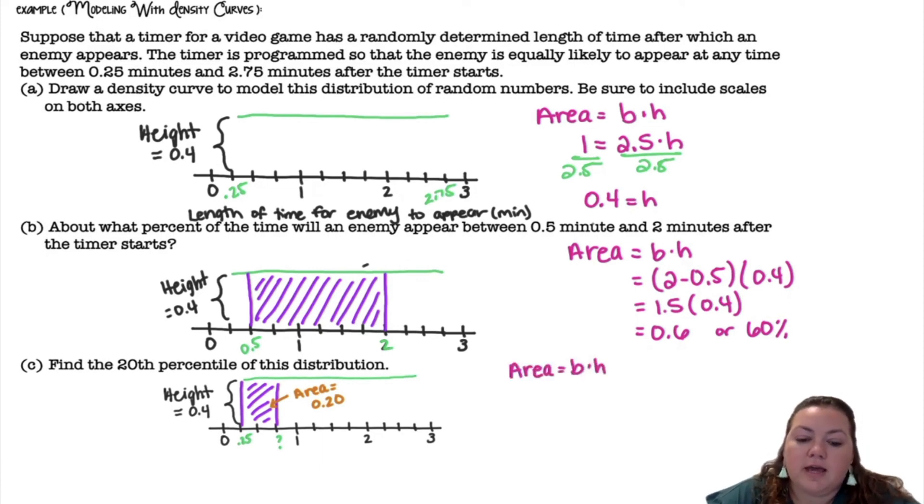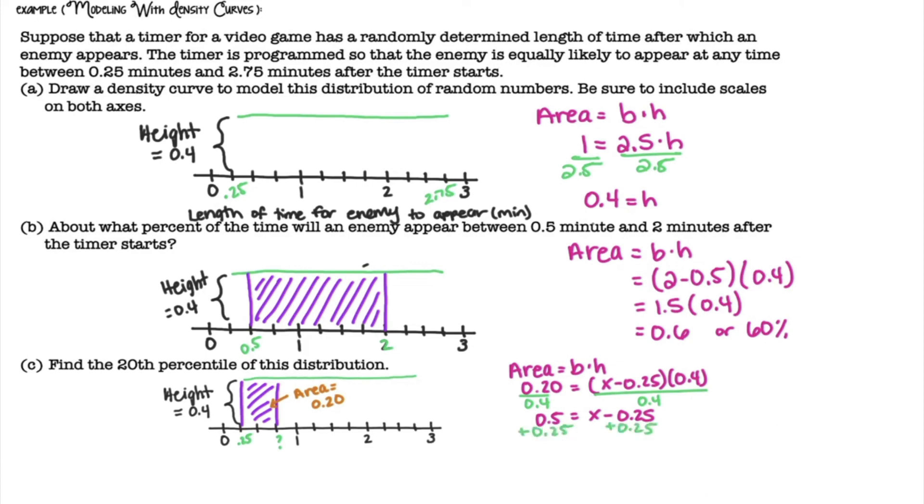So I know that the area is going to be 0.2. I don't know what the base is but I do know the height is 0.4. So the base is going to be some number minus 0.25. I'm going to divide by 0.4 on both sides and then add 0.25 to get x by itself and I get 0.75. So 0.75 minutes is where the 20th percentile lies.